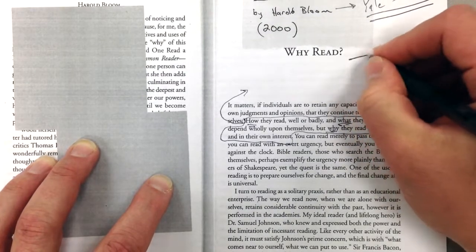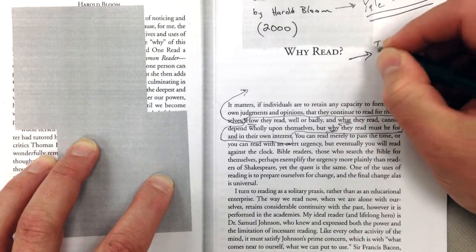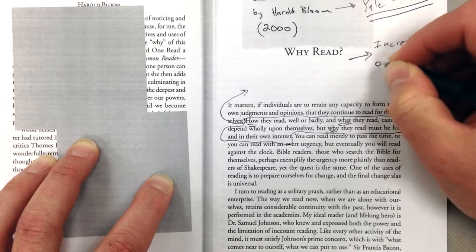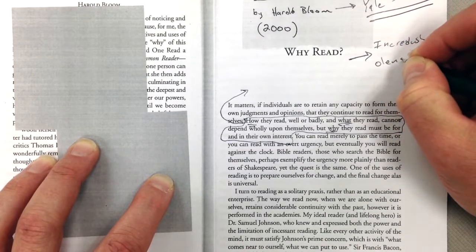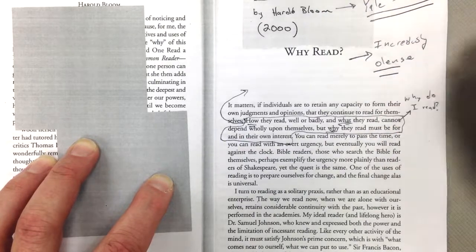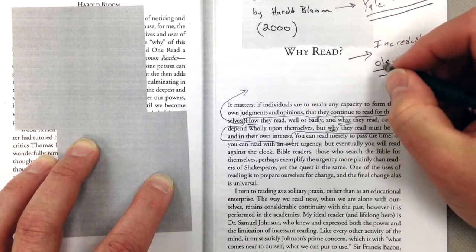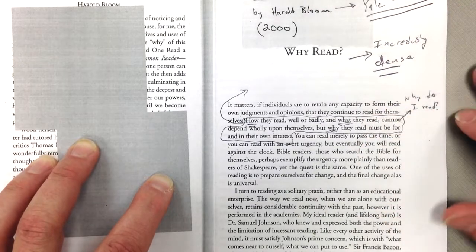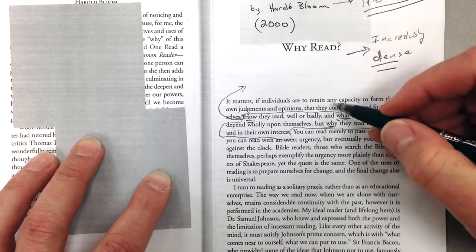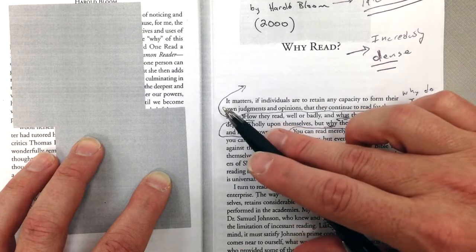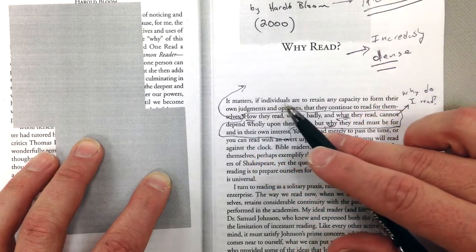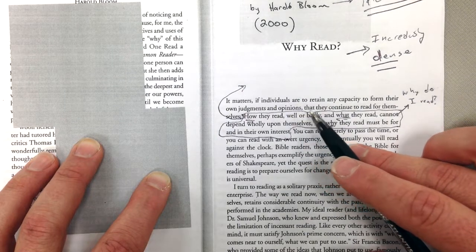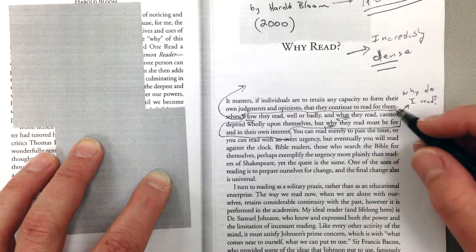Now this text, by the way, is incredibly dense. That means there's just a lot of information. So when you're reading this, you might have to read certain things twice, and the idea is that you need to, it's kind of like you read backwards and forwards. You take a stab at this first sentence. It matters if individuals are to retain any capacity to form their own judgments and opinions that they continue to read for themselves.